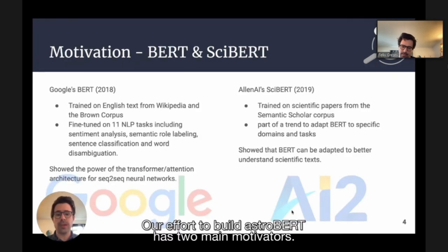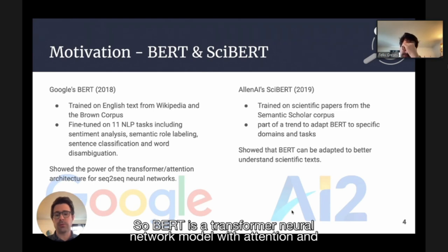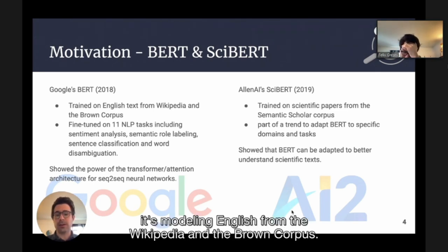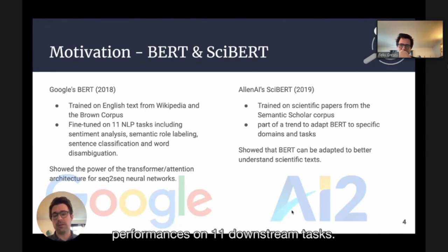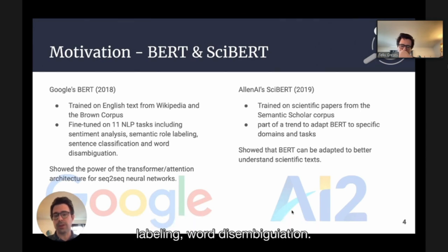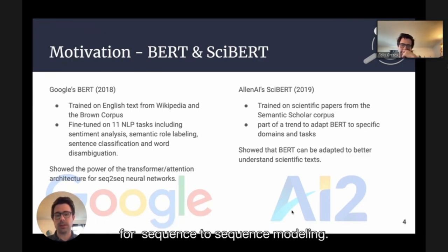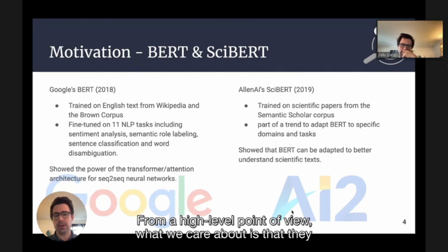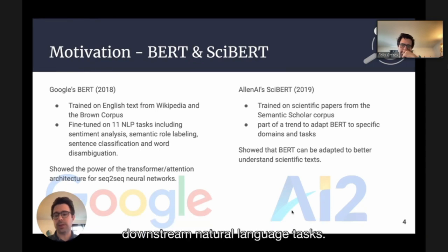Our effort to build AstroBERT has two main motivators. The first is the now-famous BERT paper from Google in 2018. BERT is a transformer neural network model with attention, modeling English from Wikipedia and the Brown corpus. That core model was then used to achieve state-of-the-art performance on 11 downstream tasks, including sentiment analysis, semantic role labeling, and word disambiguation. From a high-level point of view, what we care about is that they showed the transformer model can be used as a core for many downstream natural language tasks.